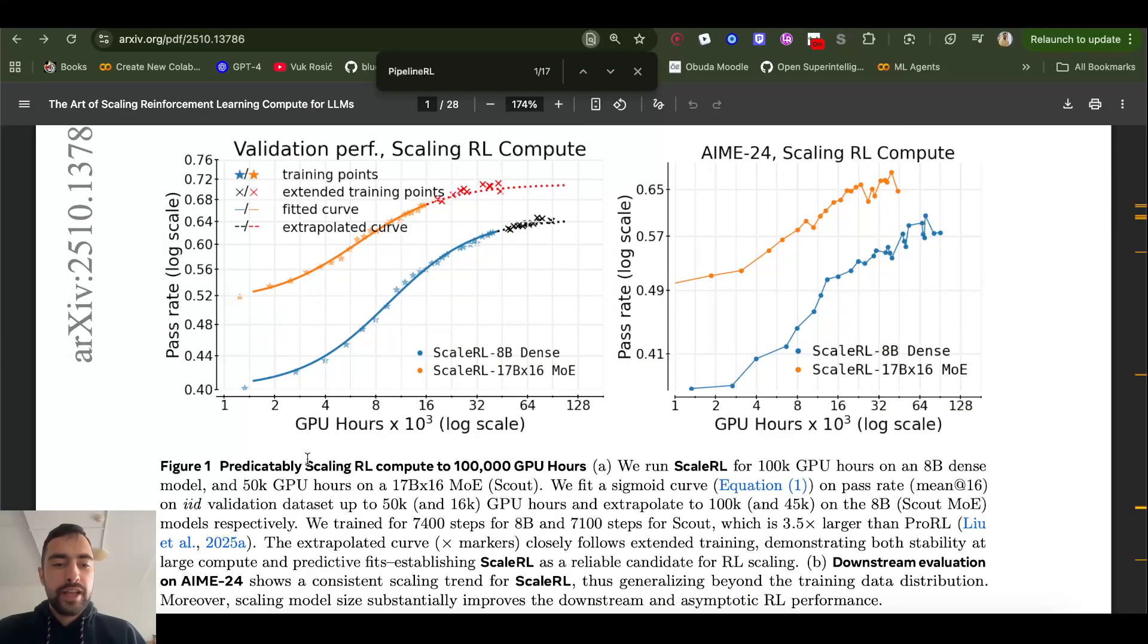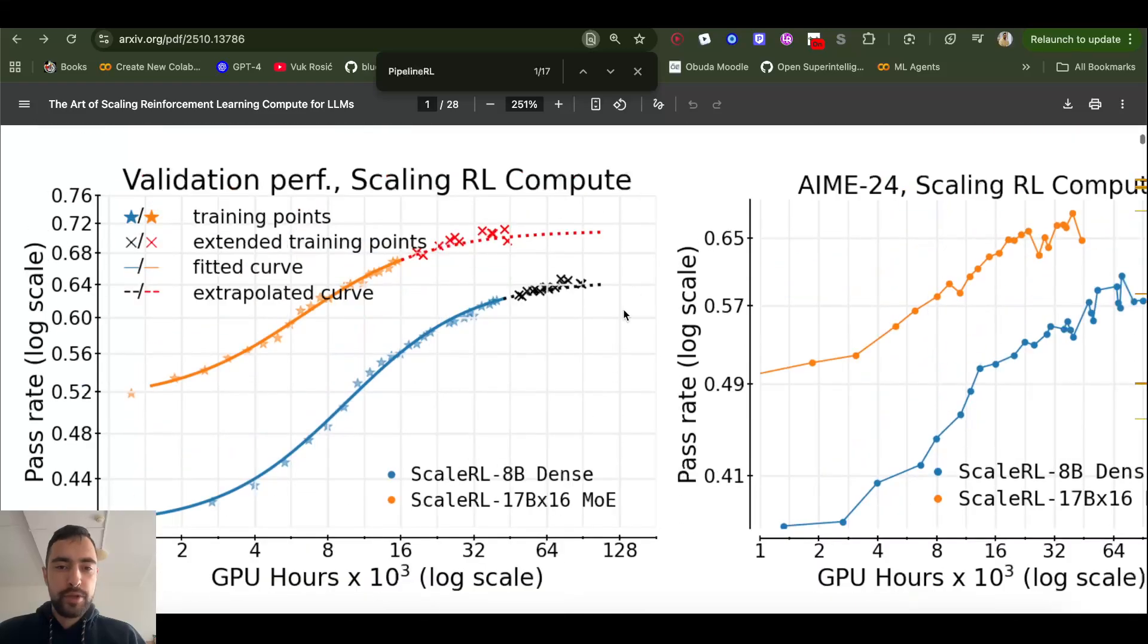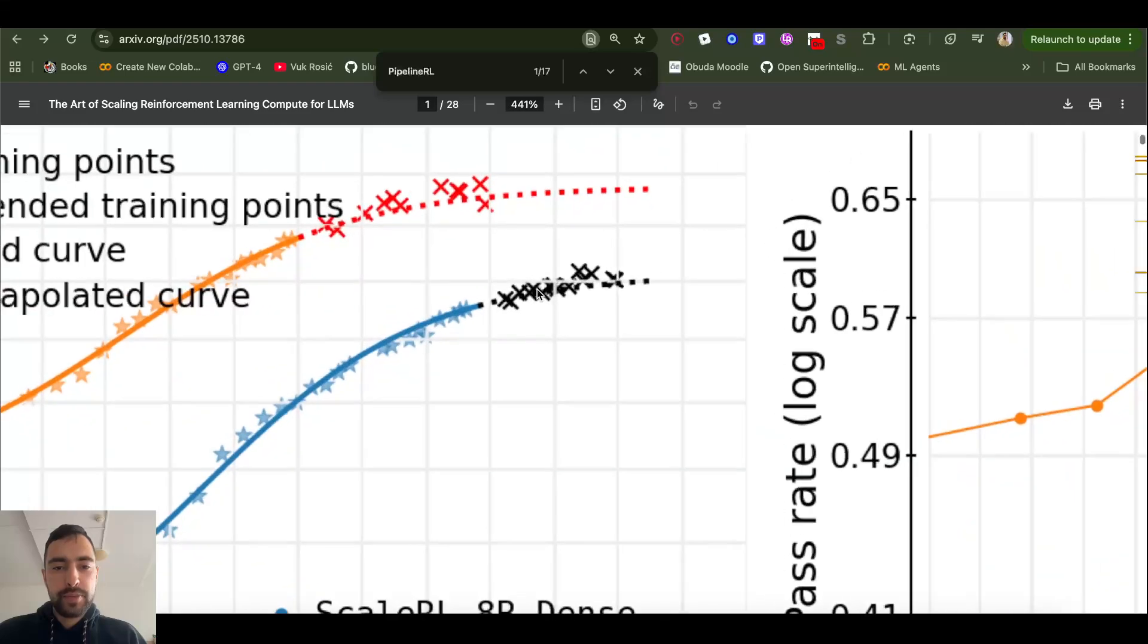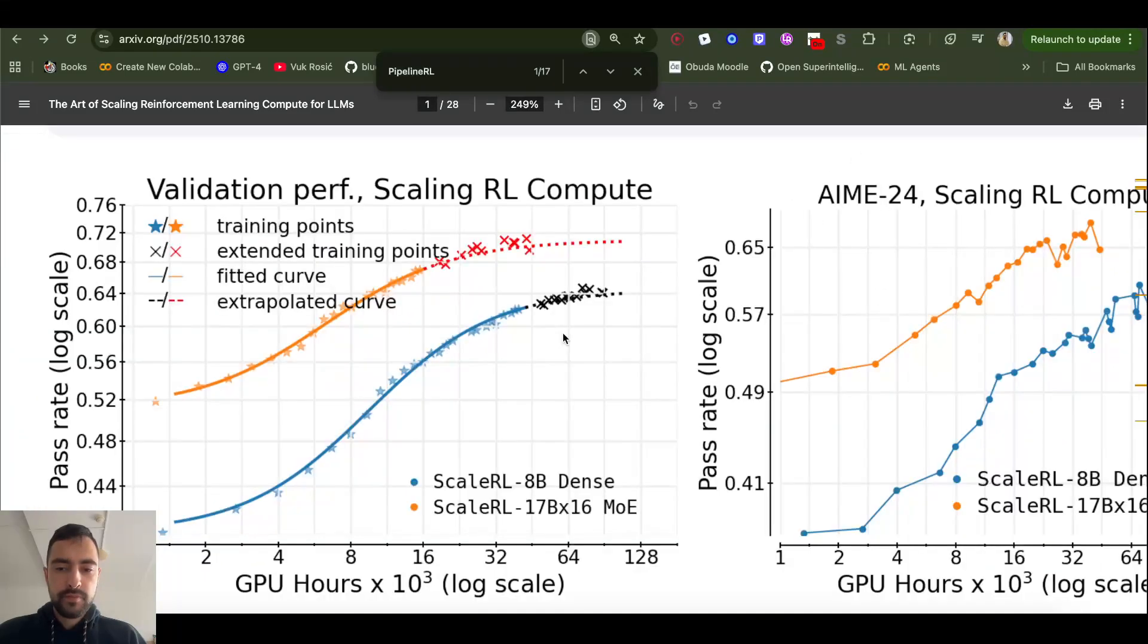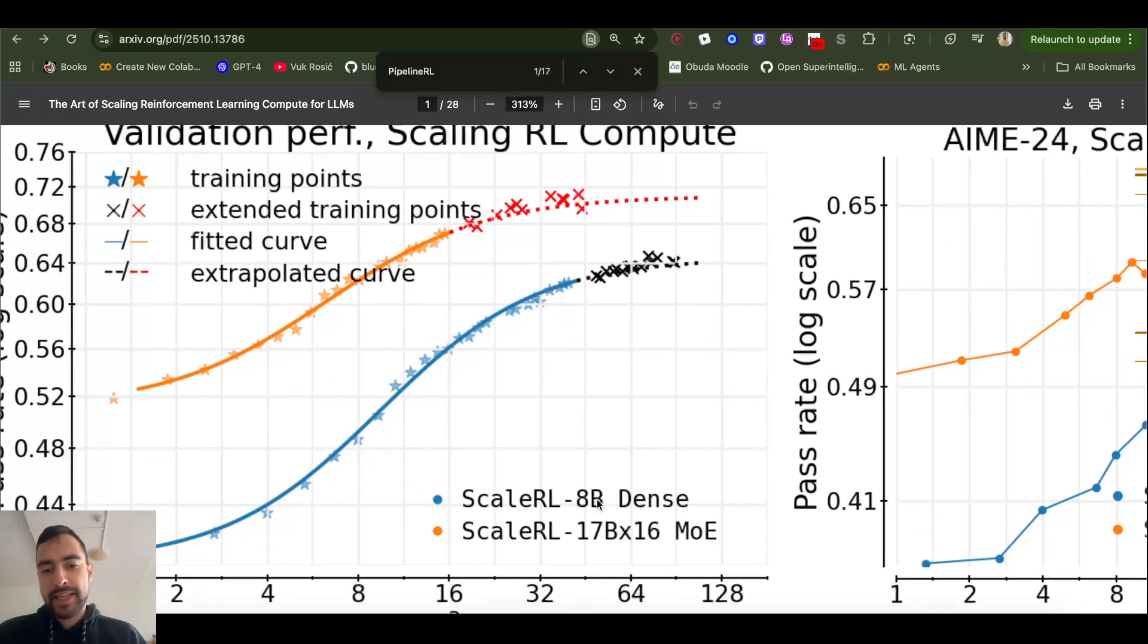Besides this, they also figured out the best way to scale, the best recipe. So this ScaleRL is a combination of different methods they tested and they just picked out the best methods and they wrote it here in this framework on how to do this. They tested this on 100,000 GPU hours. You see here the fitted curve and then predicted here, predictions it would start to plateau. This blue one is for 8B dense model and this one is for mixture of experts. But this one is just a bigger model with more parameters. So it's going to plateau a bit higher.